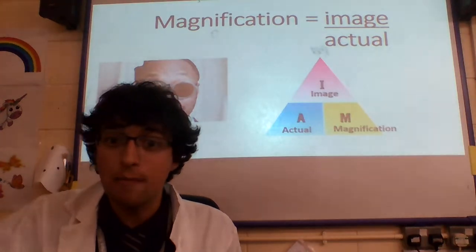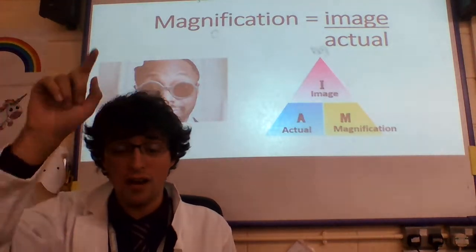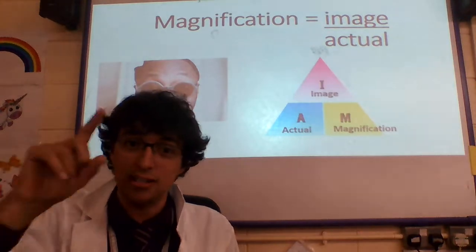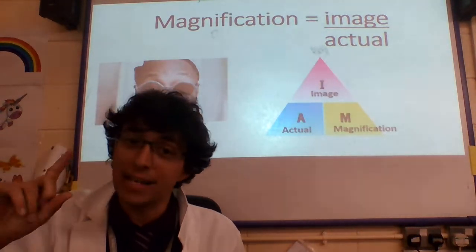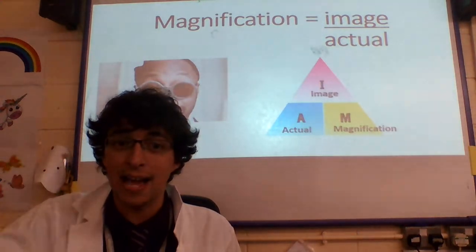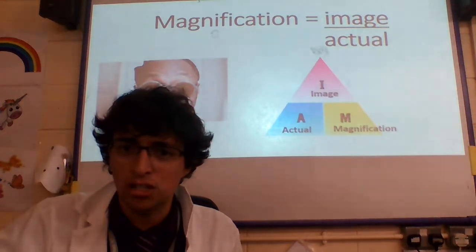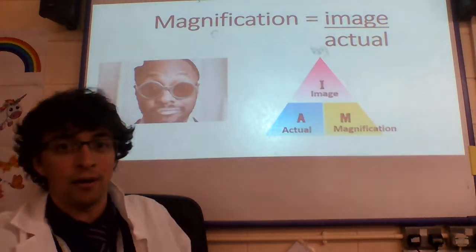So if you remember will.i.am, you remember your formula triangle: I over A and M. Image is magnification times actual; magnification is image over actual; and actual is image divided by magnification.